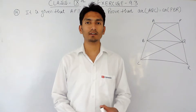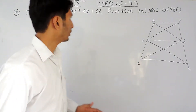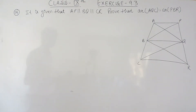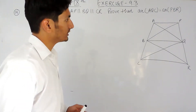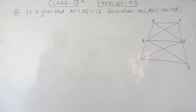Hello everyone. In this video we are going to solve question no. 14 of exercise 9.3. The question says: it is given that AP is parallel to BQ and BQ is parallel to CR. We have to prove that the area of triangle AQC is equal to the area of triangle PBR.